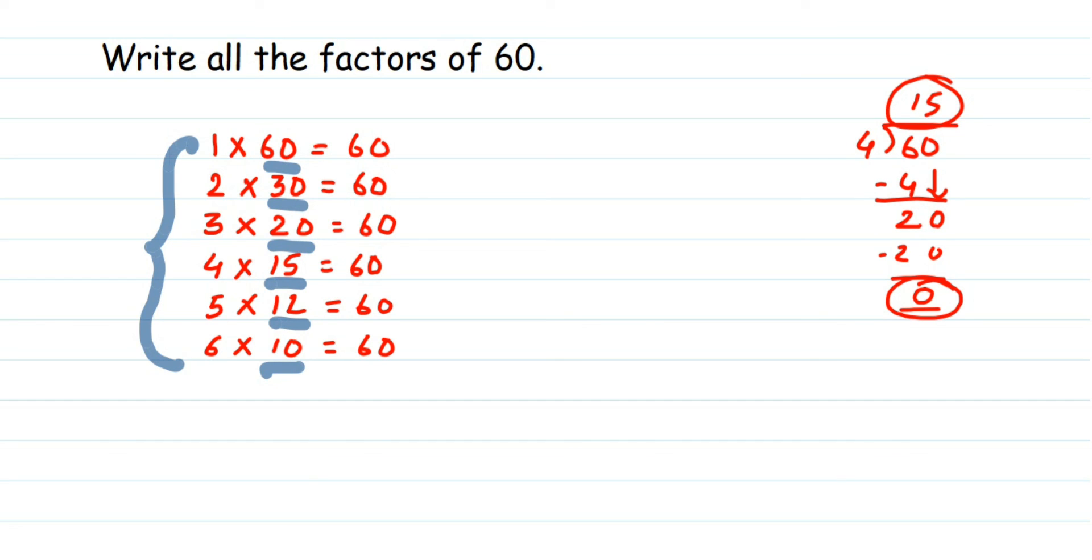So let's write down the factors of 60. Therefore, factors of 60 equals—you have to just write down all the numbers: 1, 2, 3, 4, 5, 6, but make sure the numbers don't repeat, then 10, 12, 15, 20, 30, and 60. That's it. I hope this answer is clear. In case you have any questions or doubts, you can drop a comment. Thank you so much for watching.